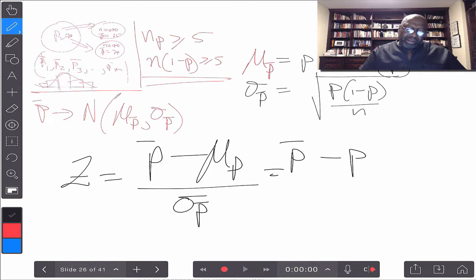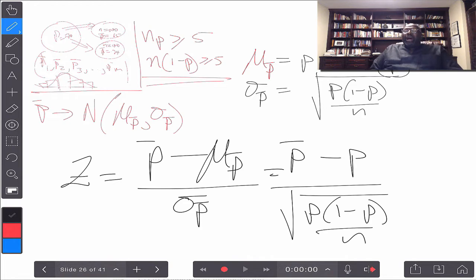If I express that in terms of the population values, it would look like P bar minus P, because we know mu P bar is P. And then the standard deviation of P bar is the square root of P times 1 minus P over N. That would give us our Z bar, and then we could calculate probabilities using that distribution. That's essentially the sampling distribution of the sample proportion, P bar. As long as we meet the conditions, that N times P is greater than or equal to 5, and N times 1 minus P is also greater than or equal to 5,